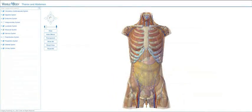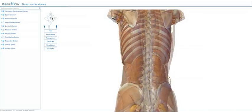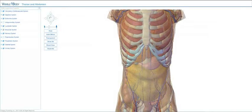Users can click the transparent button in the on-screen controls to see the relative placement of internal organs. Users can further select and hide muscles and bones, then zoom in.